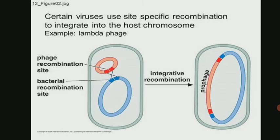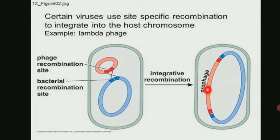This diagram shows how viruses use site-specific recombination to integrate into the host chromosome. When a lambda bacteriophage attacks bacteria, specific recombination sites are present in both the lambda phage and bacterial genome. Inside the bacterial cell, recombination occurs between the lambda phage and bacterial genome. As a result, the lambda phage genome inserts into the bacterial genome, and this type of recombination is known as site-specific recombination.